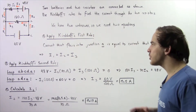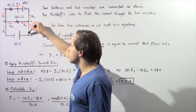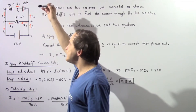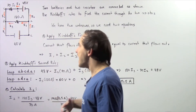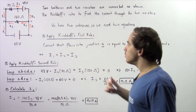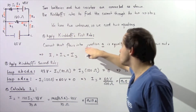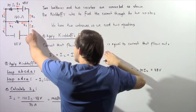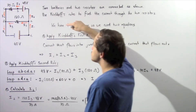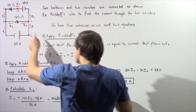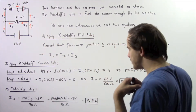Let's begin by applying Kirchhoff's first rule, which tells us that the electric current going into any junction is equal to the electric current leaving that same junction — in other words, electric current is conserved. Choosing junction A, the current flowing in, I1, equals the sum of currents flowing out, I2 and I3. So I1 = I2 + I3. Let's call this equation 1.